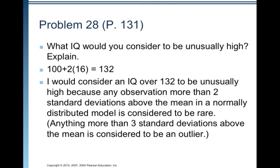I would consider an IQ over 132 to be unusually high, because any observation more than two standard deviations above the mean in a normally distributed model, that's very important that you're dealing with something that's normally distributed, and we are told that we are, is considered to be rare. Anything more than three standard deviations above the mean is considered to be an outlier. But they didn't ask us that, just unusually high. So any IQ score over 132 is considered to be unusually high.